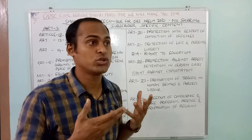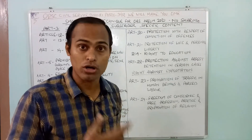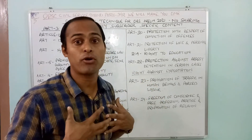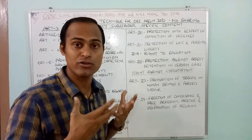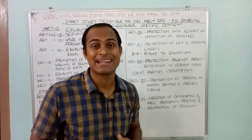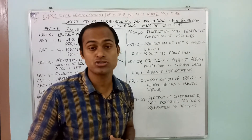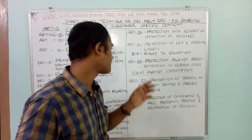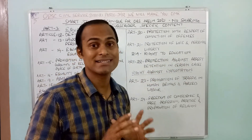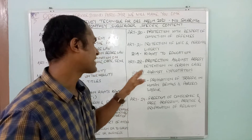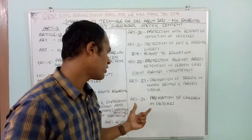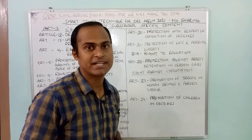There are several inferred rights under Article 21 — right to marry, right to have a child, right to food — because these are fundamental for living as a human being. Article 21A covers the right to education, which was placed under Article 21A through the 86th Constitutional Amendment Act. Article 22 covers protection against arrest and detention in certain cases. Article 23 prohibits trafficking in human beings and forced labor. Article 24 prohibits employment of children in factories.